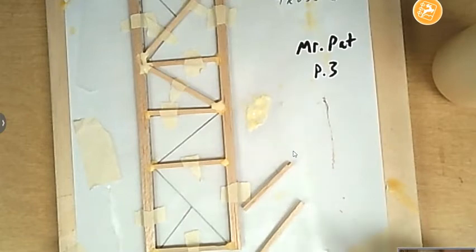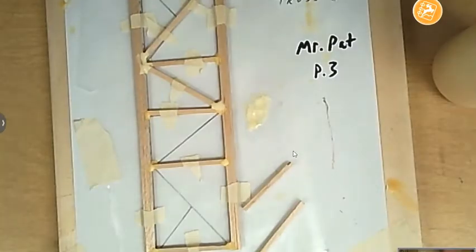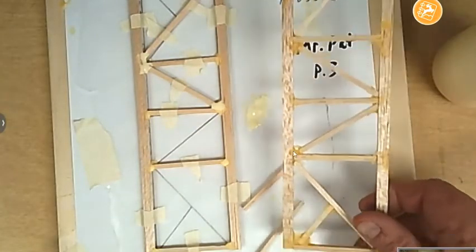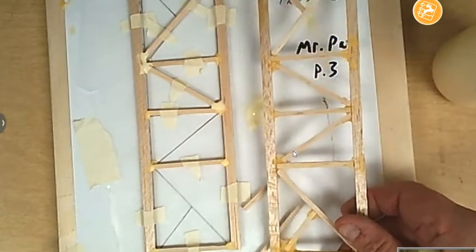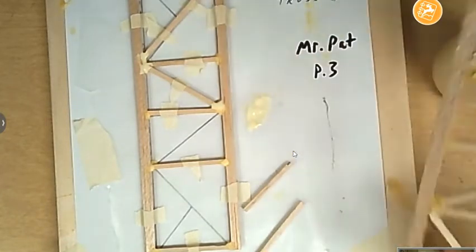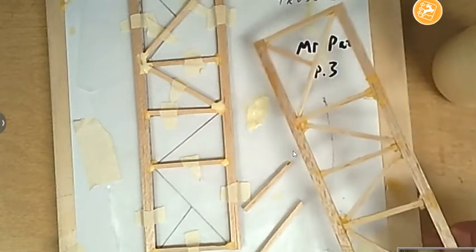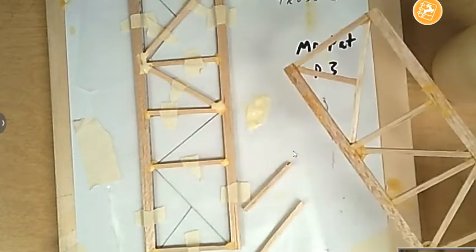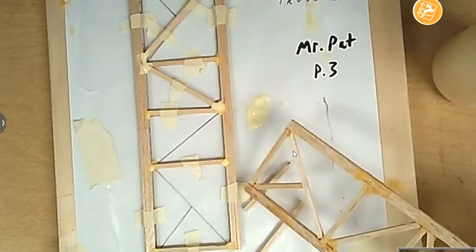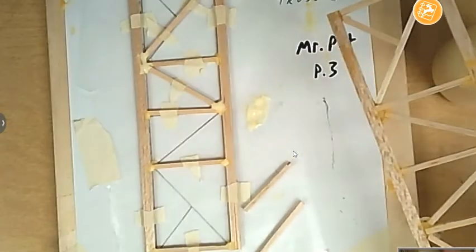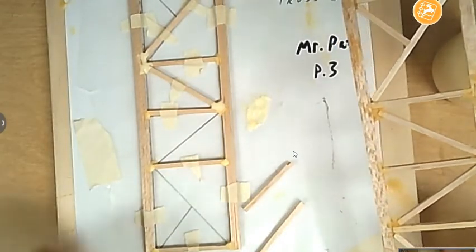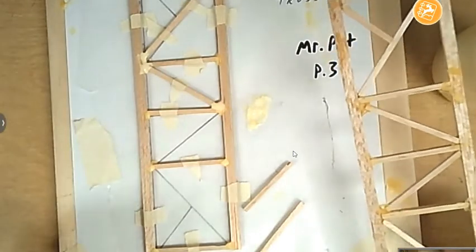And before long, I should have a truss that looks something like this. Okay. Let's say I finish this entire first side. What I would do is very carefully, after all the glue is dried, after all the pieces have been glued, I would very carefully peel away all these tiny pieces of tape. And then I would peel off that truss without breaking it. Again, maybe using a ruler as kind of like a spatula to peel it off.